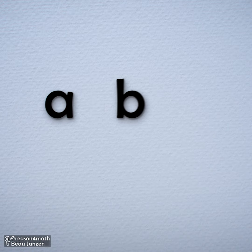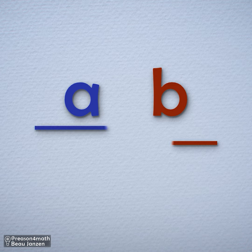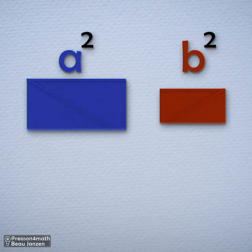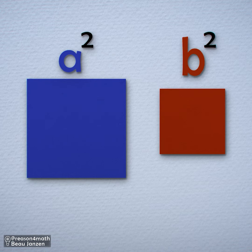Again, we're working with quantities A and B, which we can visualize as line segments. To create the idea of A and B squared, we can turn those segments into squares with areas of A squared and B squared.